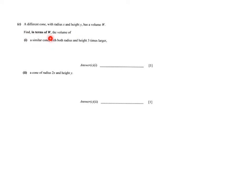Find in terms of w, that is in bold, so that's important, the volume of... Then the first question, and this is all for one point, so it shouldn't involve too much work. It says, find the volume in terms of w of a similar cone with both radius and height three times larger. But what is important of course, that we are talking about a similar cone.